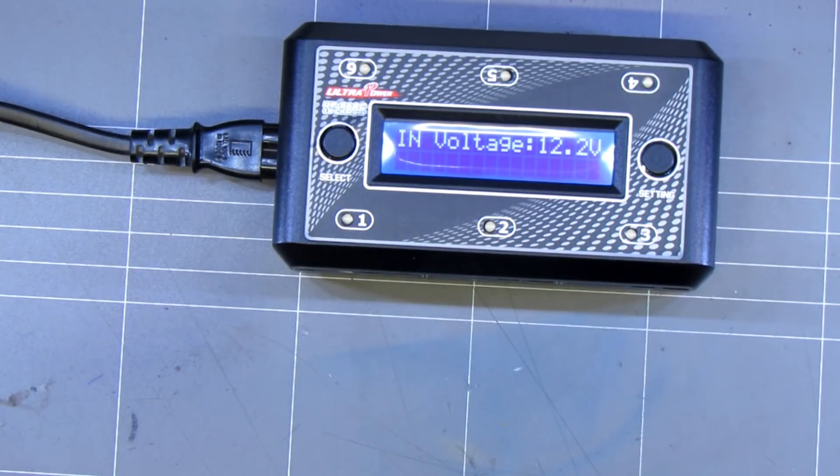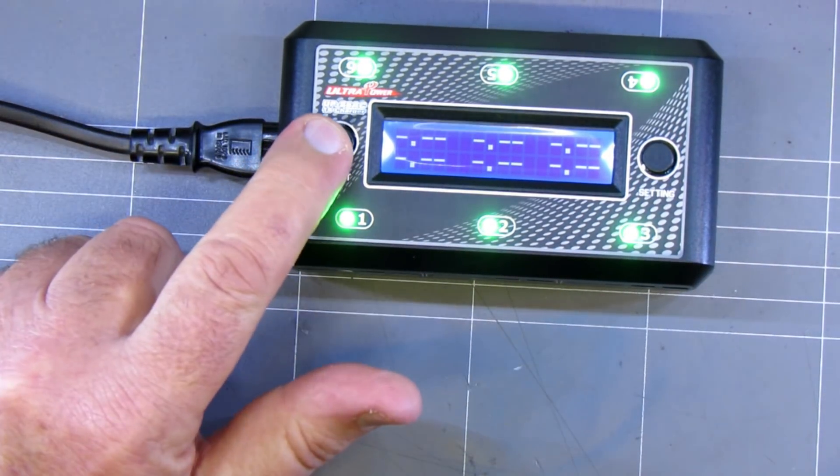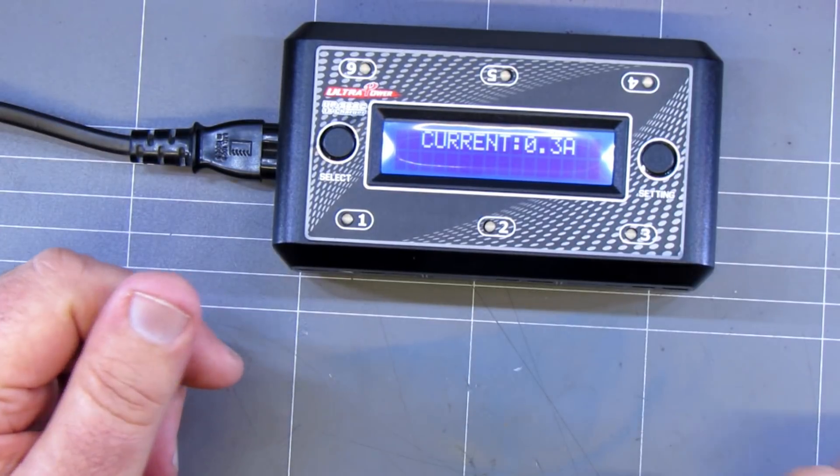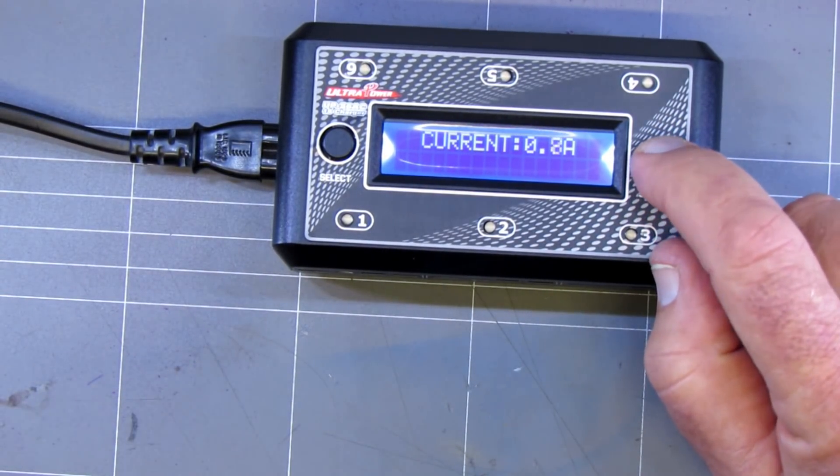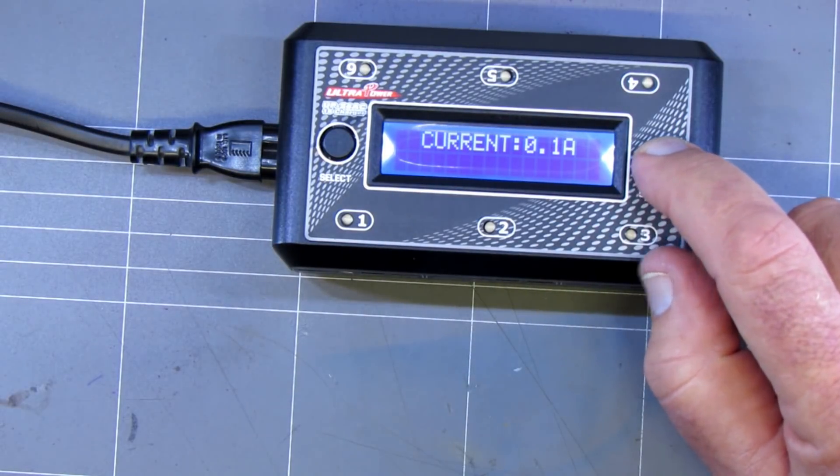Pretty straightforward to use. You've got your select button on the left hand side. Press that once. It brings up your current which you can adjust with the right hand button. It'll cycle through from 0.1 amp to 1 amp and cycle back again.